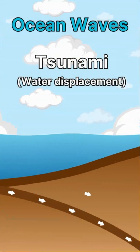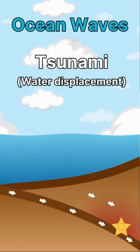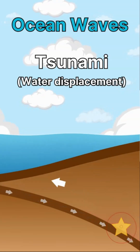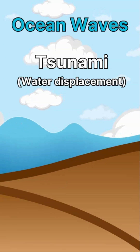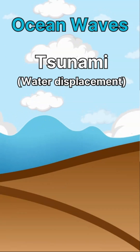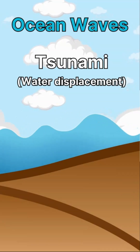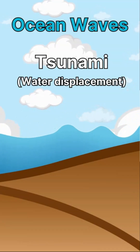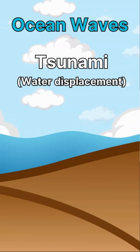We also have waves caused by tectonics and water displacement. These are called tsunami waves, and they form from underwater earthquakes, underwater subduction zones, underwater volcanic eruptions, and landslides, which displace large volumes of water. Meteor or asteroid impacts can also displace large amounts of water.